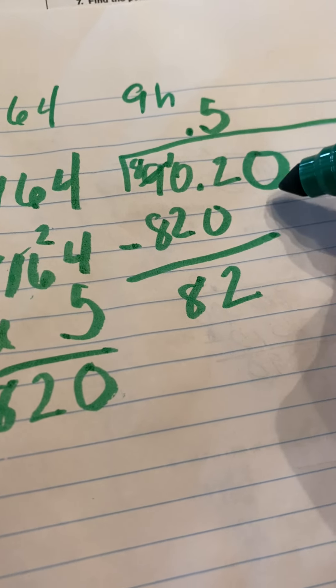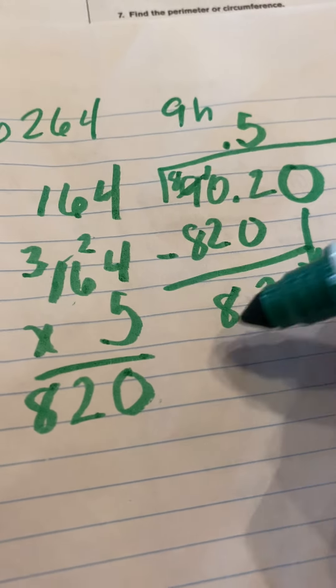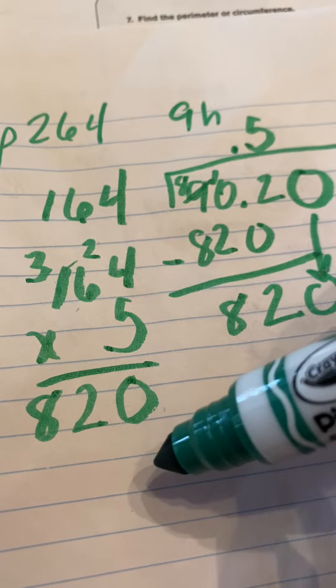Now, we're not done. We've got to add some decimals since we did not get an even answer. I'm sorry, add some 0s. So we added a 0. Let's drop it down.